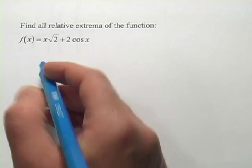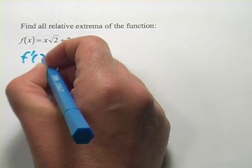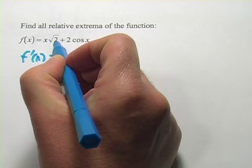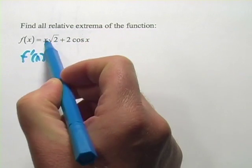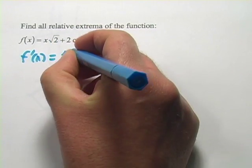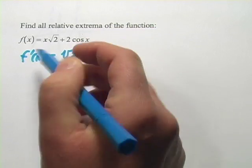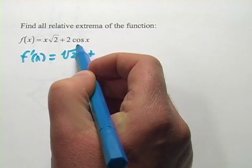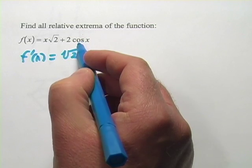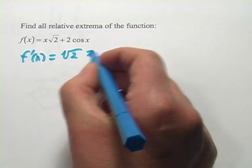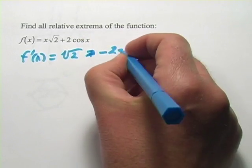So the first step here is to take the derivative. And this square root of 2 is just a constant. The x goes to 1, so this just becomes square root of 2. And 2 times the cosine of x, well, cosine of x, the derivative, is the negative sine. So this is actually minus 2 sine x.